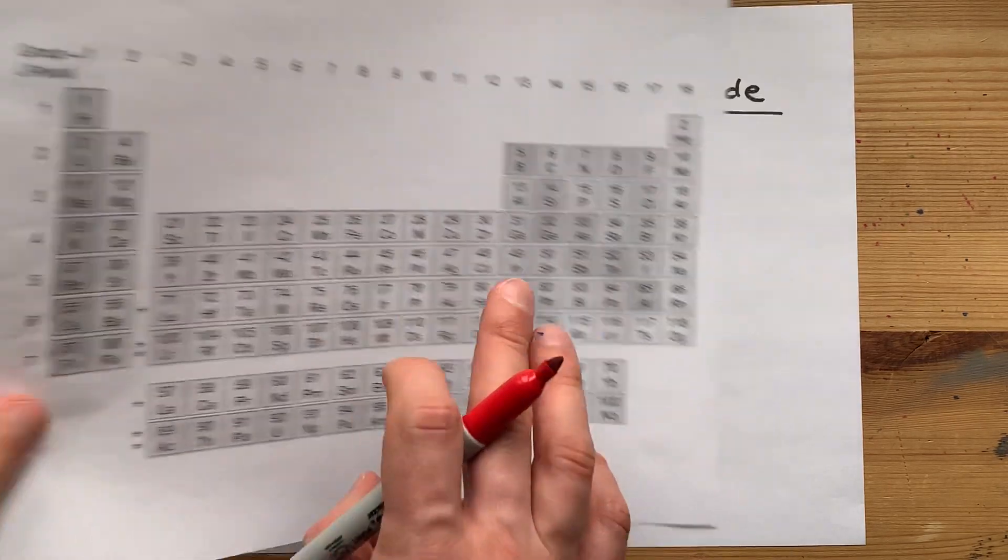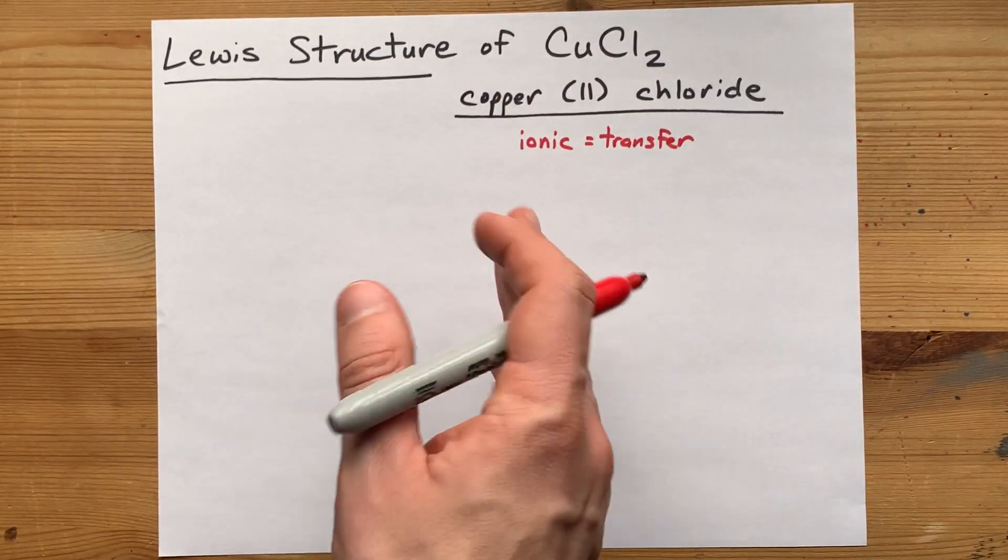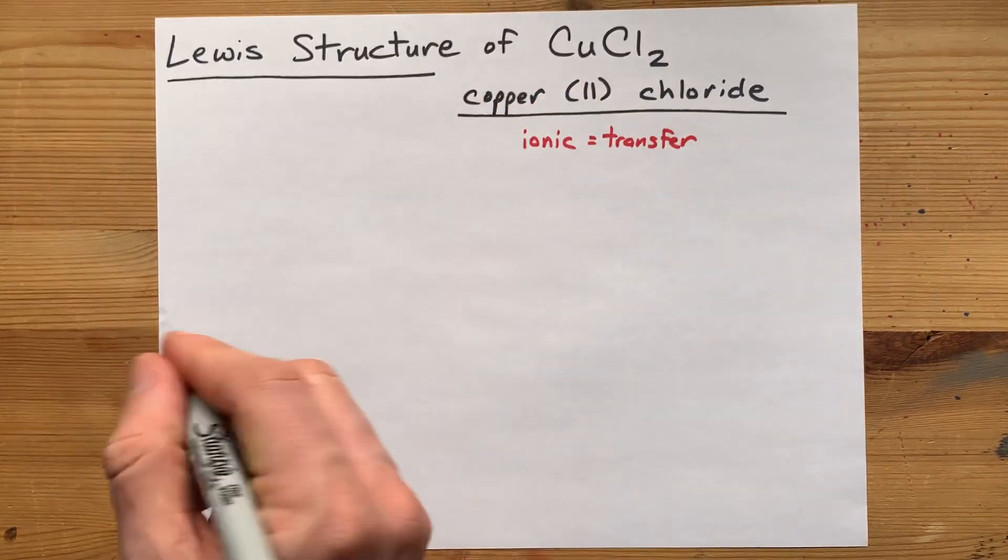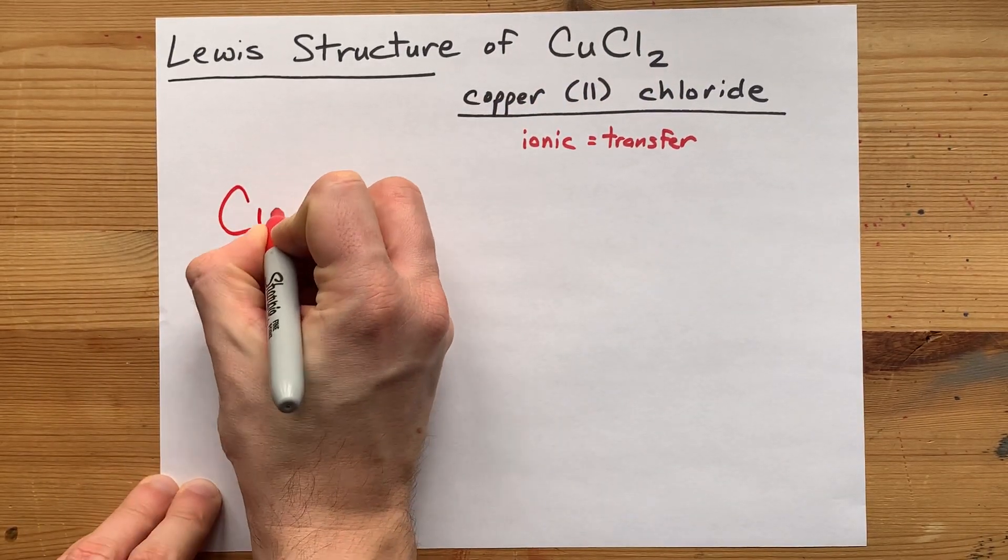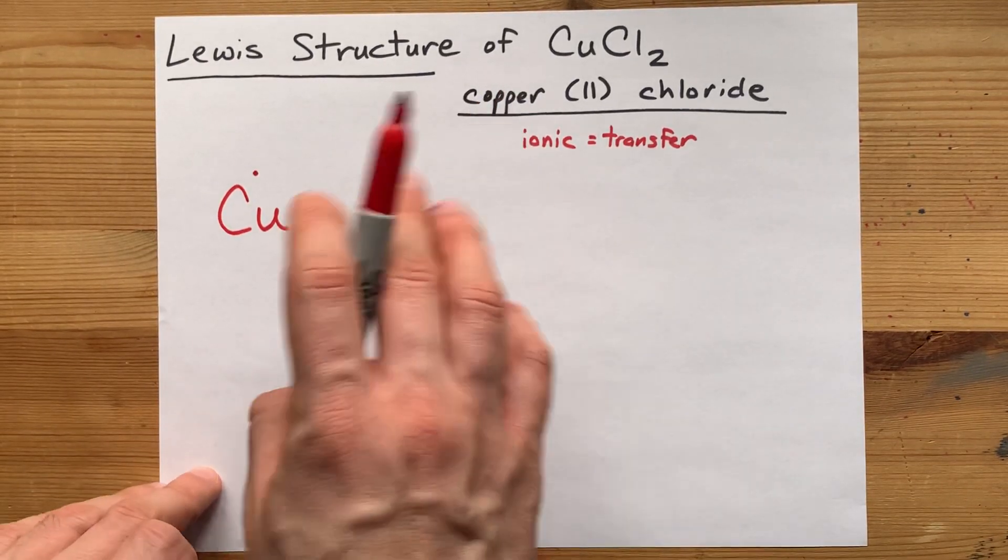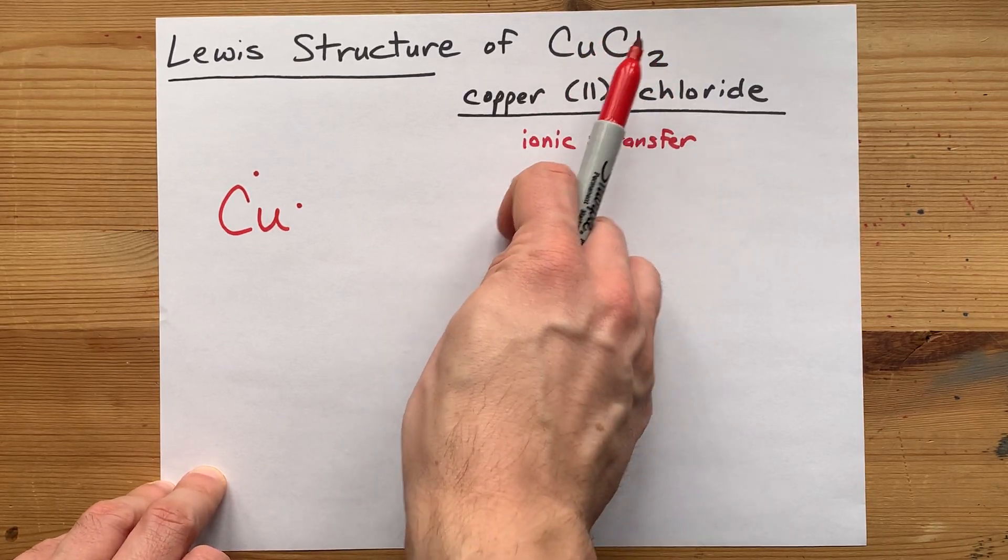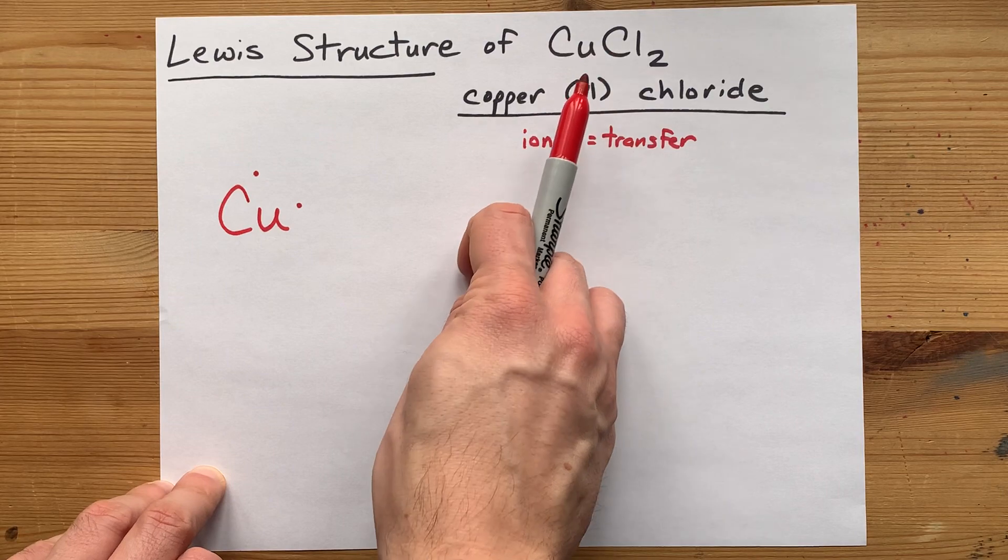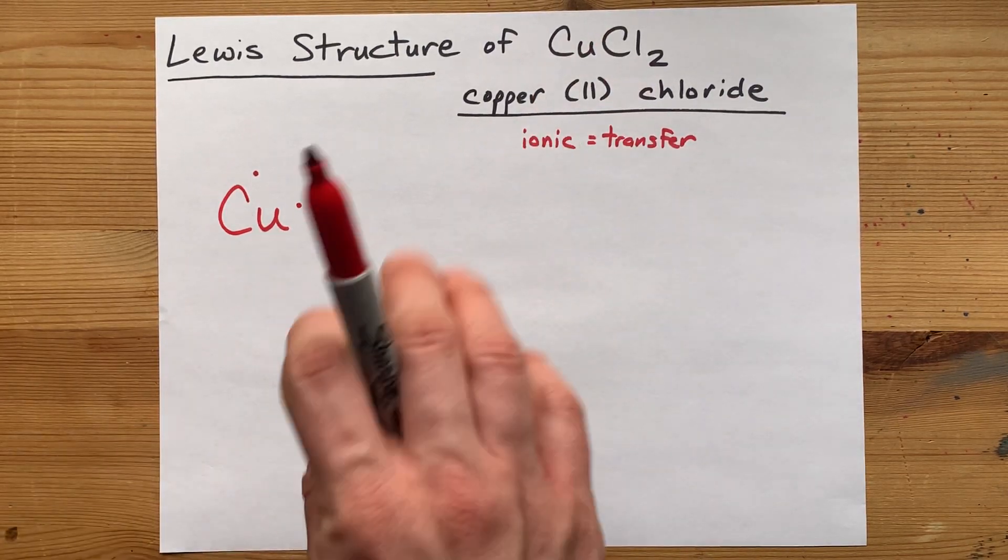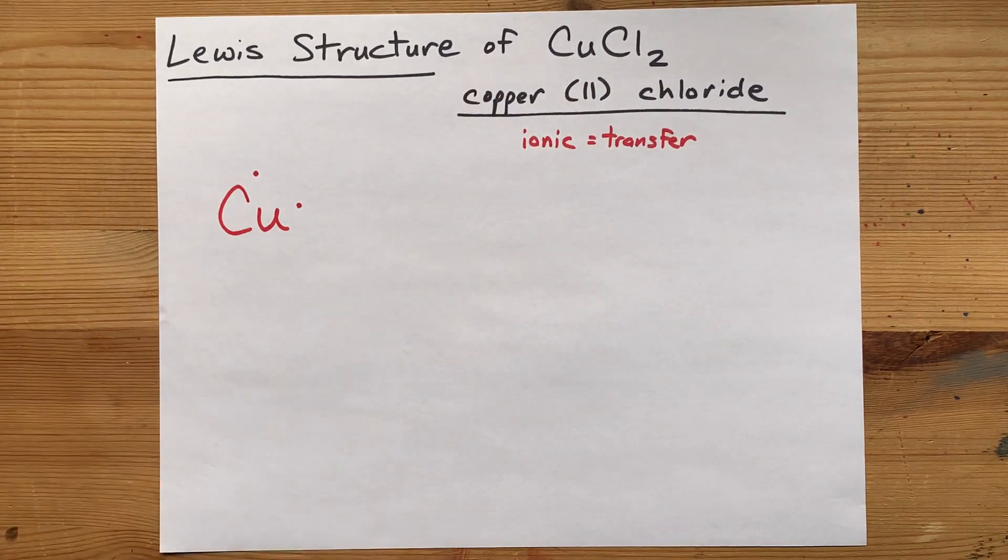Whatever the charge is on the atom itself is how many valence electrons you draw. Copper(II) chloride, I want you to draw copper with two valence electrons. One, two. That two is also where this two comes from, because the formula is made by crisscrossing the charges. Chlorine brought a charge of minus one. Copper brings a charge of plus two. Anyways, copper(II) chloride brings two valence electrons.